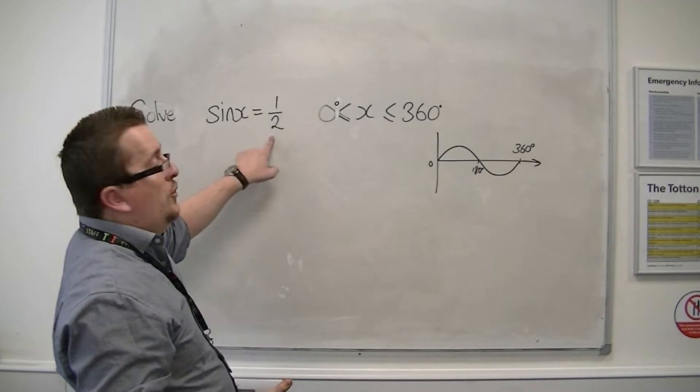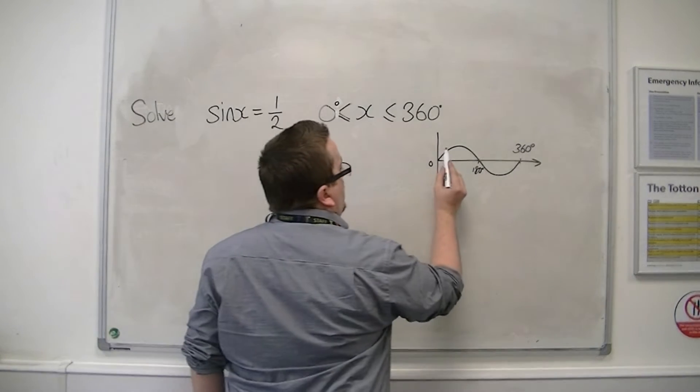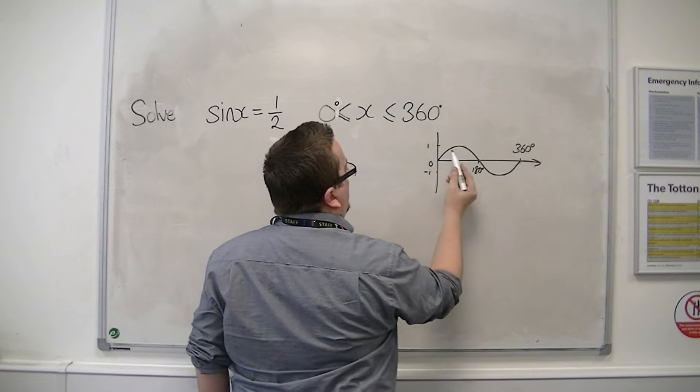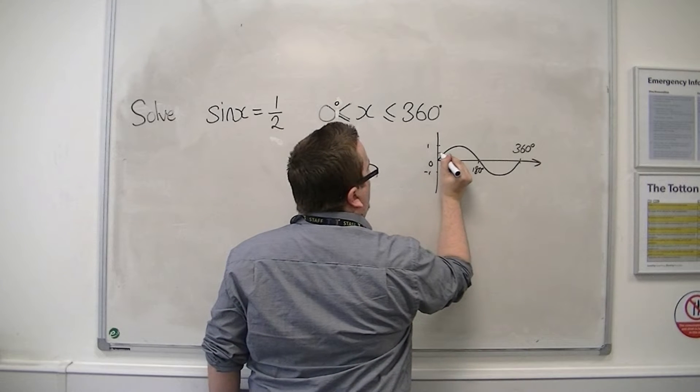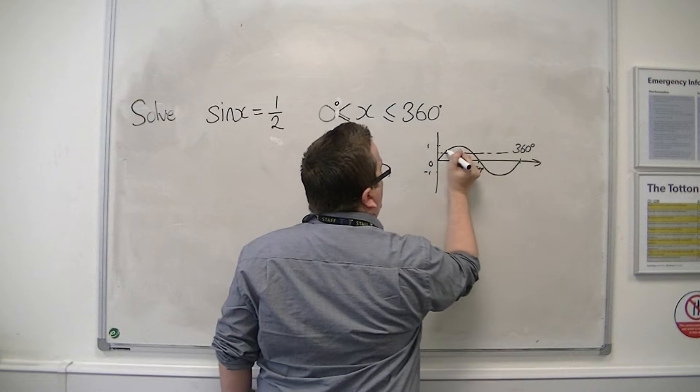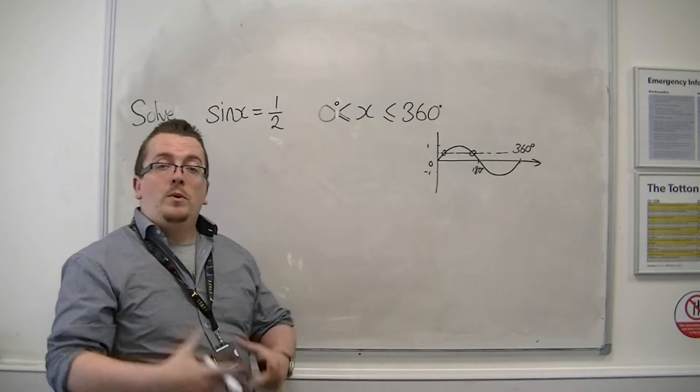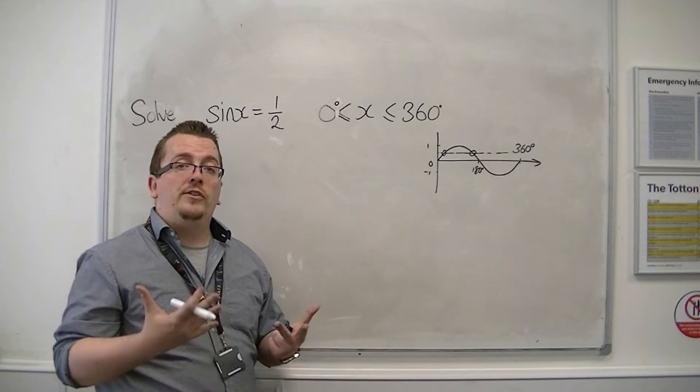Now if we're going to be solving it as sin x equals 1 half, then we know that the sin curve goes between minus 1 and 1, and so 1 half would be there. And so this line is going to intersect the curve at two points. So we know that there are going to be two solutions to find.